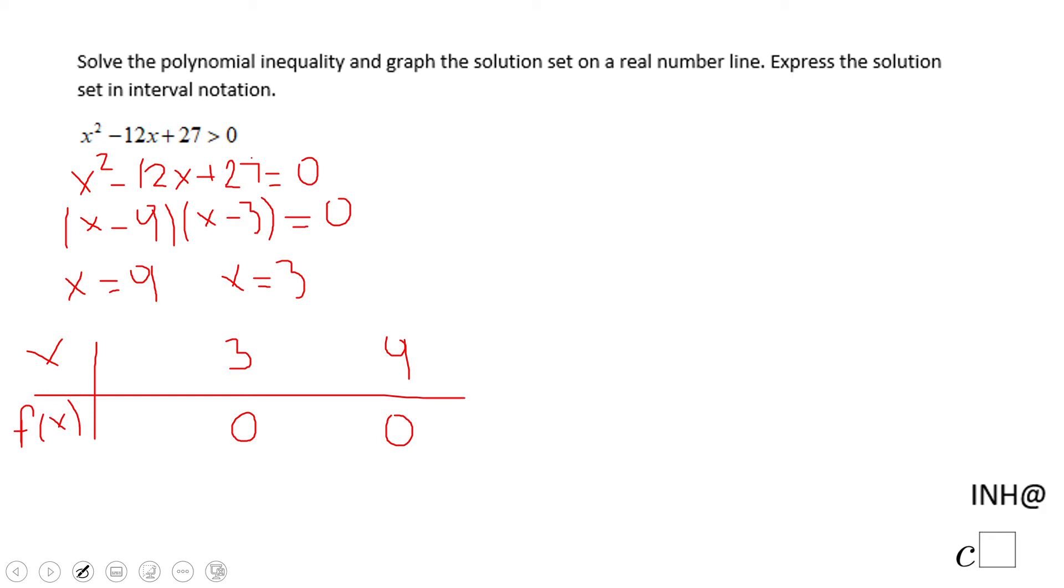The first one I have in mind is zero. When x equals zero, f of x becomes 27. f of zero will be 27.